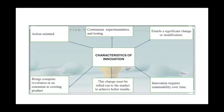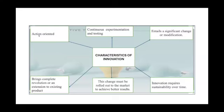Moving on to the characteristics of innovation: first, innovation is action-oriented, meaning it is something you practice or do deliberately to achieve a result, and it requires continuous experimentation and testing. A good example is the automobile industry — take Toyota, which each year comes out with new models upgrading the previous year's model, marking continuous experimentation and testing.